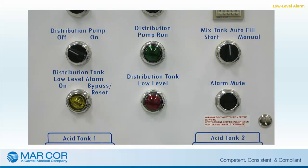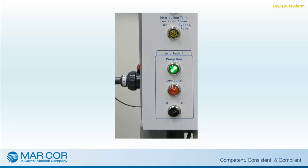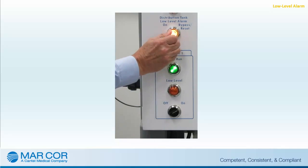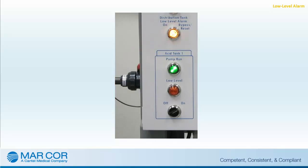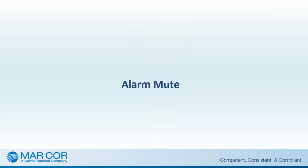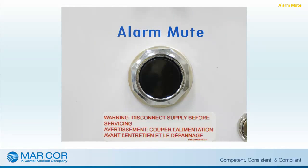An audible alarm sounds to prompt the user to recognize the low-level condition and take steps to replenish the distribution tank solution levels and/or disable the alarm. When the distribution tank low-level alarm hand switch is turned to the reset bypass position, the alarm will be discontinued. Pressing the alarm mute switch will silence the audible alarm for a period of five minutes. The alarms will not sound again if the alarm condition is removed during this period, with the exception of the distribution tank low-level alarm that does require the resetting of the distribution tank low-level hand switch.